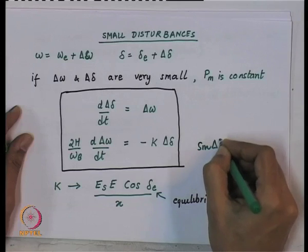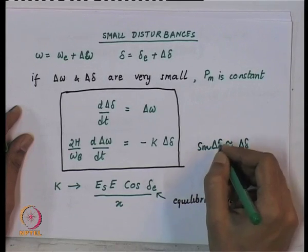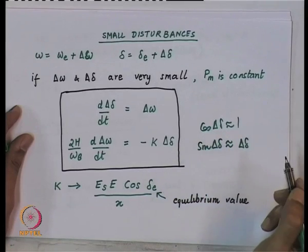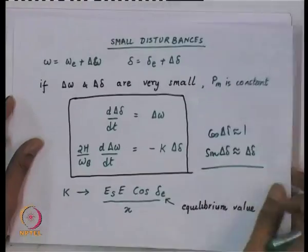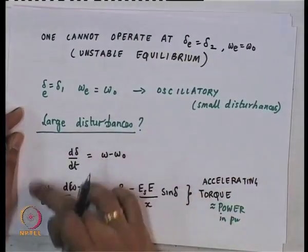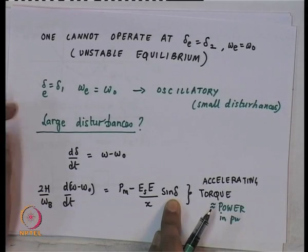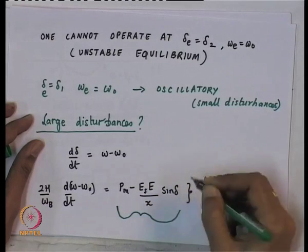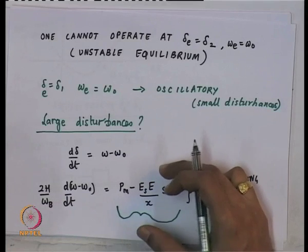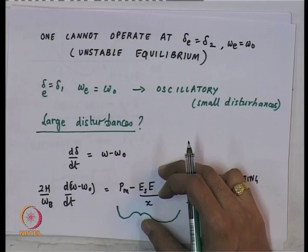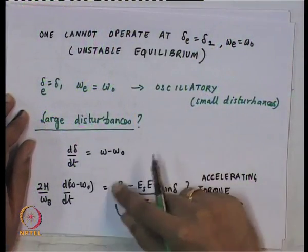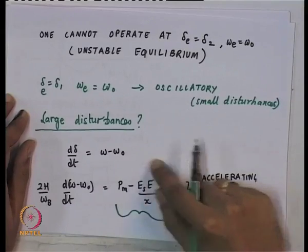This approximation was the basis for the linear model. For large disturbances, we cannot use this linearized model. We have to use the full nonlinear model in which sin(delta) is retained. Looking at the accelerating torque or accelerating power term: we are talking in per unit and we assume speed deviations from equilibrium are not too large, so per-unit torque and per-unit power are almost equivalent.